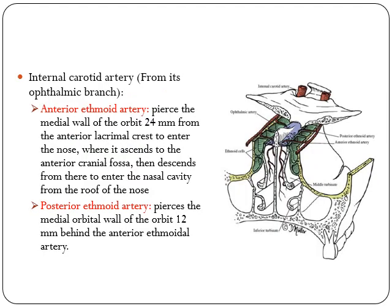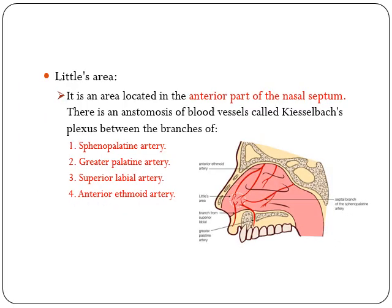The internal carotid artery branches that supply the nasal cavity are the anterior ethmoidal artery and the posterior ethmoidal artery. There is an area located in the anterior part of the nasal septum where there is an anastomosis of blood vessels called Kiesselbach's plexus, between branches of the sphenopalatine artery, the greater palatine artery, the superior labial artery, and the anterior ethmoidal artery.